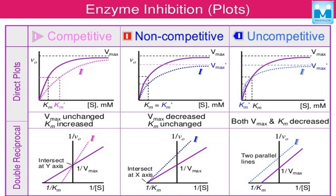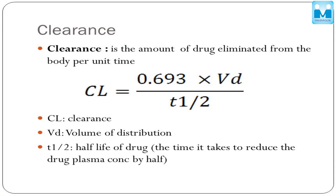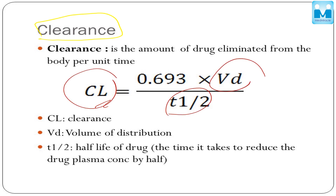This is what I was talking about in enzyme kinetics — competitive and non-competitive inhibition with examples. And this is the formula section — this particular one is about clearance. Most questions give you some values and ask you to calculate clearance or vice versa, such as calculating the half-life. So you have to be thorough with the formulas.